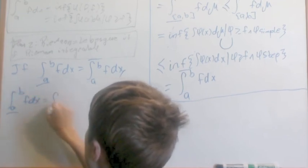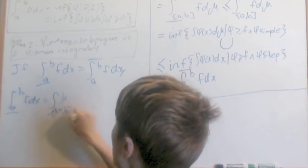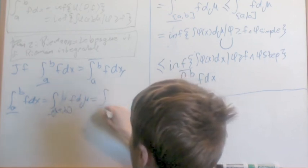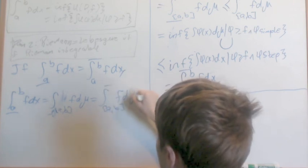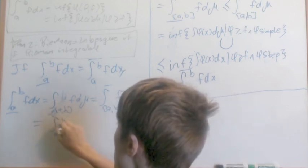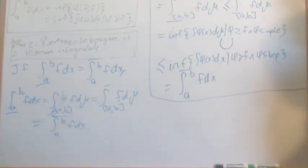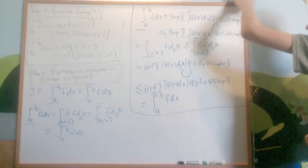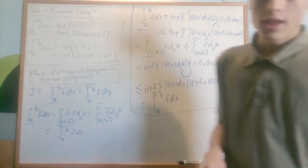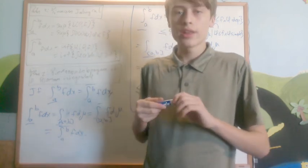If we require that the lower Riemann integral equals the upper Riemann integral — i.e., f is Riemann integrable — then all the inequalities collapse into equalities. Therefore the lower integral from a to b of f dx equals the Lebesgue integral over [a,b] of f dμ, which equals the upper integral. In one fell swoop, we've proved that every Riemann integrable function is also Lebesgue integrable and that the Riemann integral equals the Lebesgue integral. It's really quite simple but very useful.